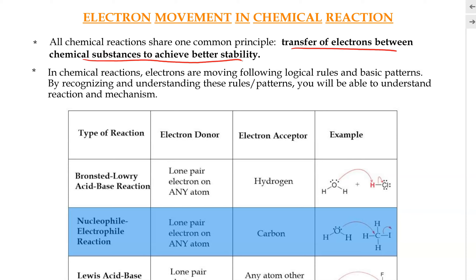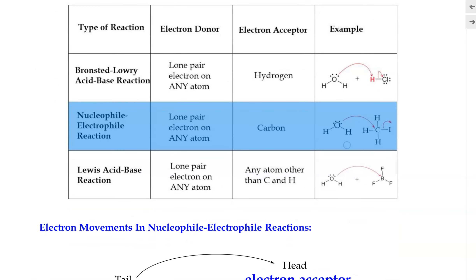As a chemical reaction is happening, it is really important that we recognize some of the basic patterns of how electrons move. By understanding and recognizing this pattern or rule, we'll be able to predict and understand chemical reactions. In this video, our emphasis is on the nucleophile and electrophile types of reaction.